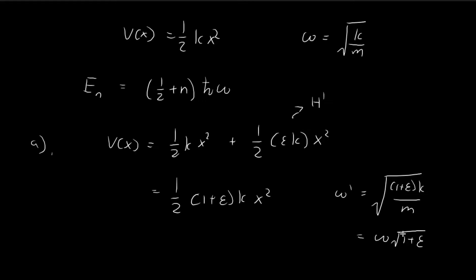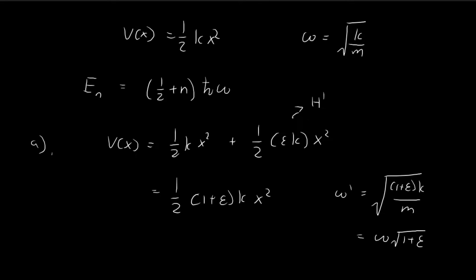So the allowed energy levels is now equal to one-half plus n h bar times omega prime. And we've just found that omega prime is just equal to omega times the square root of one plus epsilon. So this is just equal to omega times one plus epsilon to the power of one-half.